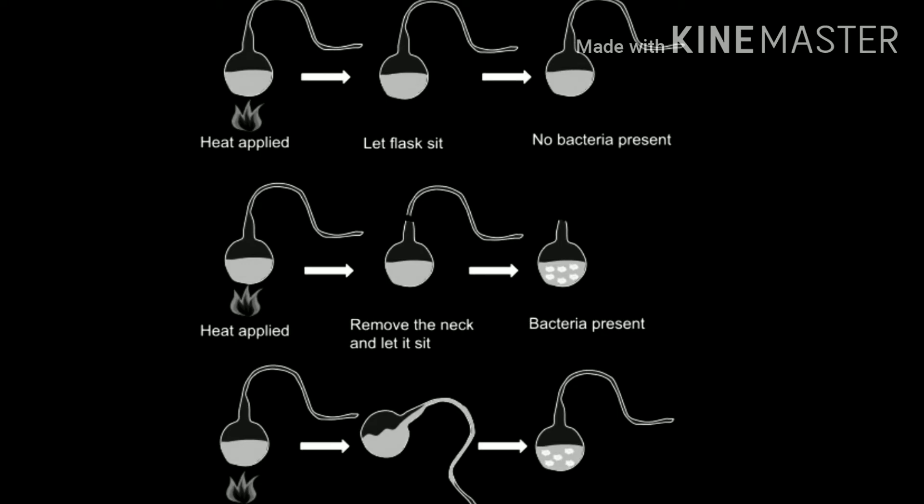He showed that beef broth could be sterilized by boiling it in a swan-neck flask, which has a long bending neck that traps dust particles and other contaminants before they reach the body of the flask. However, if the broth was boiled and the neck of the flask was broken off following boiling, the broth, being re-exposed to air, eventually became cloudy, indicating microbial contamination. These experiments proved that there was no spontaneous generation.